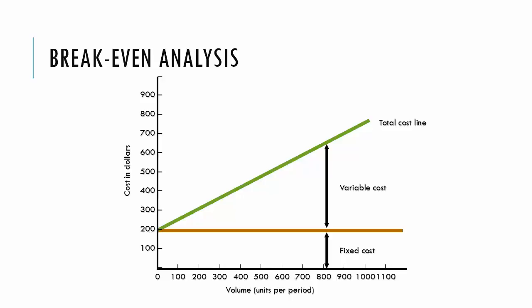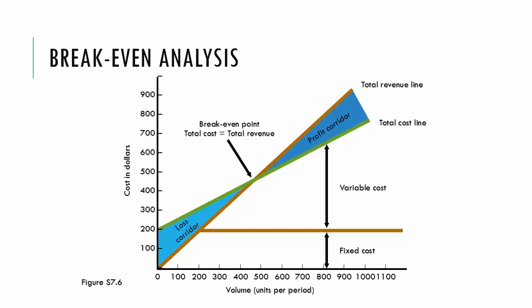The total revenue line starts at zero and goes up at a variable rate. We hope the total revenue line is steeper than the total cost line. Why? Otherwise we would never make money.